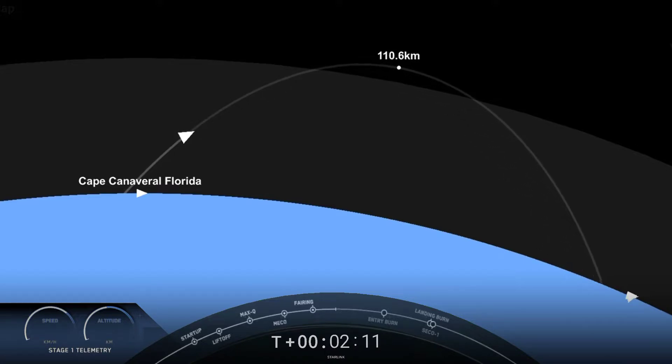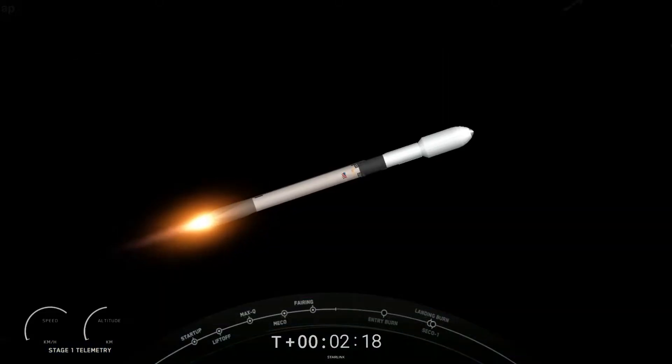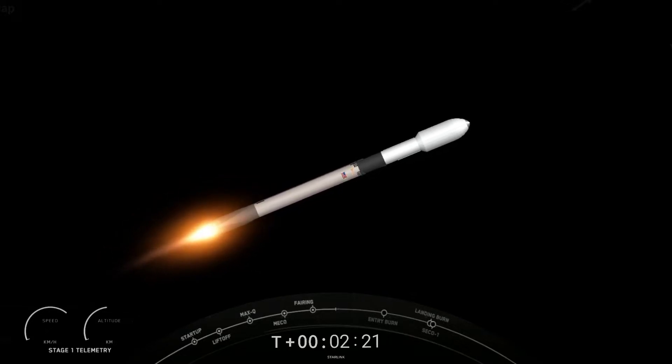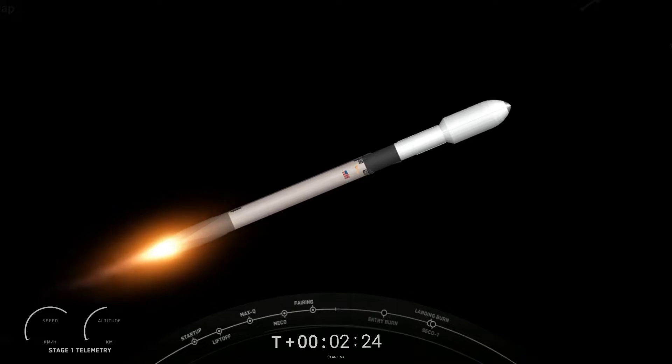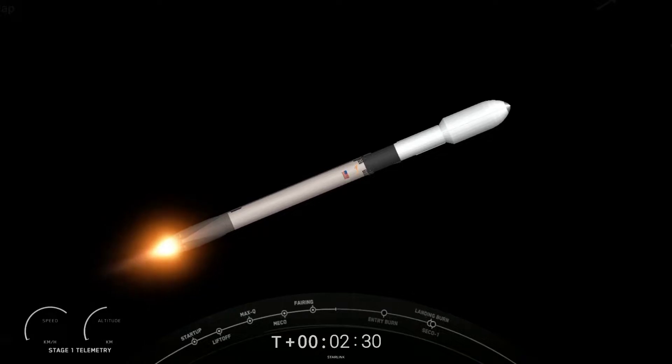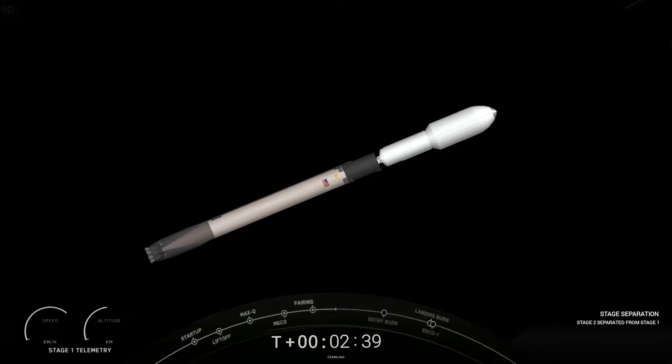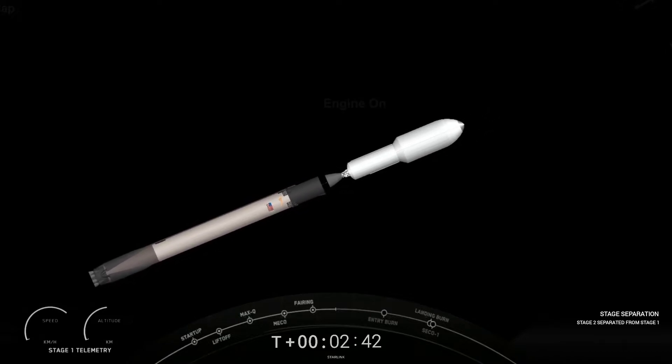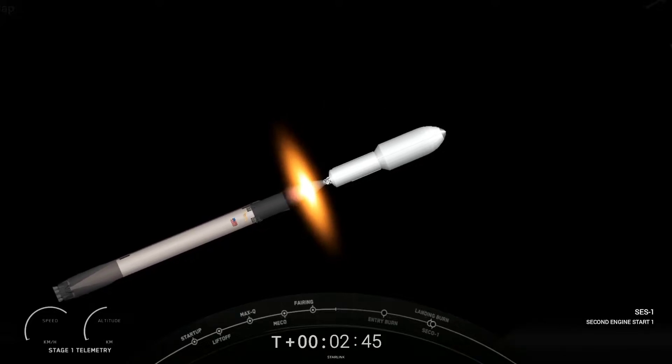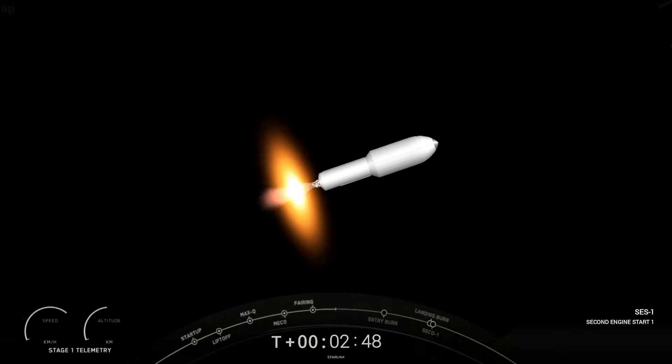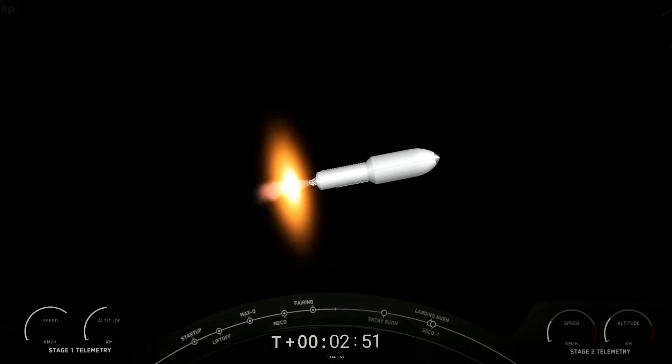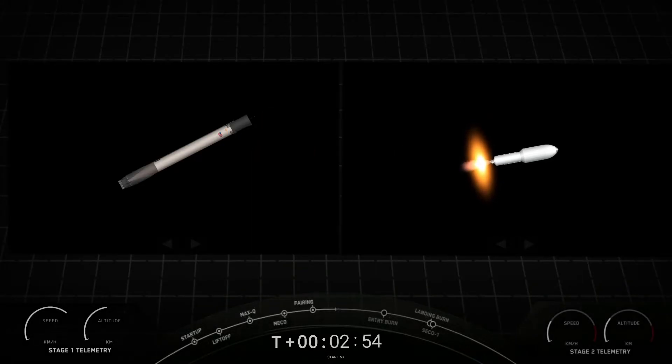We've got some awesome views watching Falcon 9 on ascent. We're just about 15 seconds away from those three events. MECO, stage separation, and SES-1 just about 10 seconds or so after SES-1. We should also see the fairing halves jettisoned from the second stage. Main engine cutoff. Stage separation confirmed. Entry back ignition. Fairing separation confirmed.